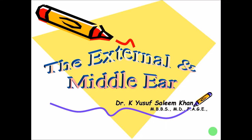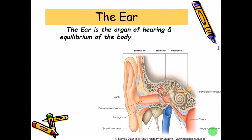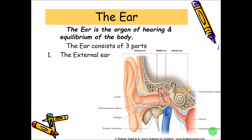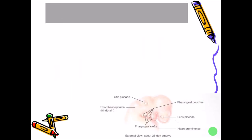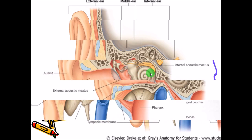Hi friends, in this lecture we will revise the external and middle ear. The ear is the organ of hearing as well as equilibrium. The ear consists of three parts: the external ear, middle ear, and internal ear. In this picture you can appreciate the external ear made up of the pinna as well as the external acoustic meatus, then the middle ear and the internal ear.